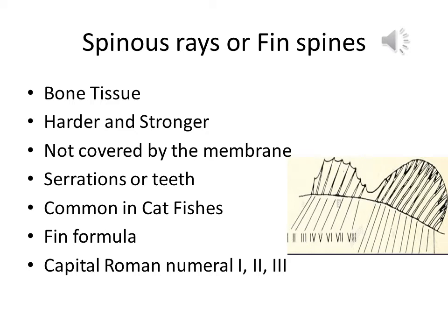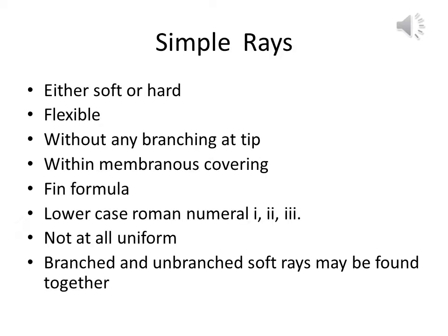Hard and soft rays can be distinguished easily. The fourth type is simple rays. Simple rays are either soft or hard. These rays are flexible but without any branching at the tip. In the anal fin, these remain within the membranous covering. In the fin formula, these are cited as lowercase Roman numerals. The rays of a fin are not at all uniform — hard rays and branched or unbranched soft rays may be found together in two fins, one following the other, as in perches.